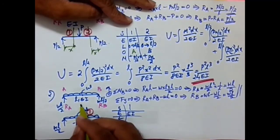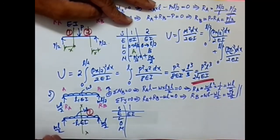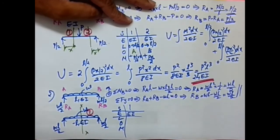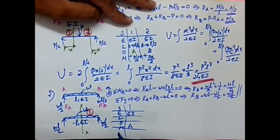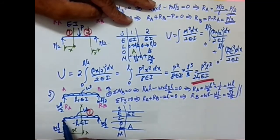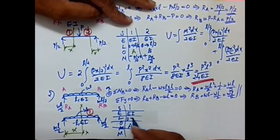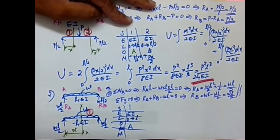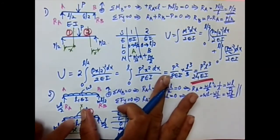Considering a section in this segment: looking to the left or right gives the same number of forces, so it makes no difference whether we choose A or B as origin. Just for a change, let's take A as the origin. With A as origin, the distance is X, and the limit for the single segment is 0 to L.